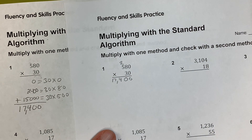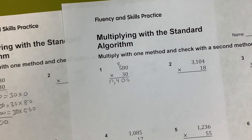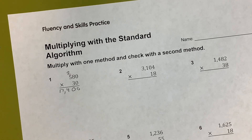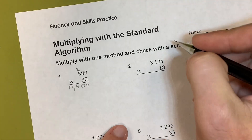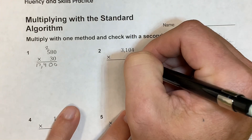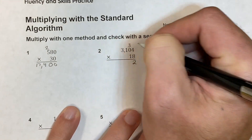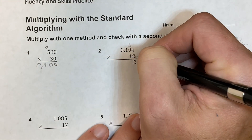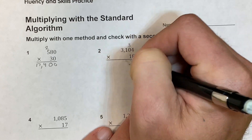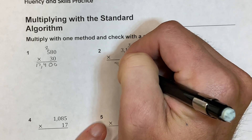The next one I'll do in standard algorithm. We start with the 8: 8 times 4 is 32, carry my 3. 8 times 0 is 0 plus 3 is 3. 8 times 1 is 8, and 8 times 3 is 24.